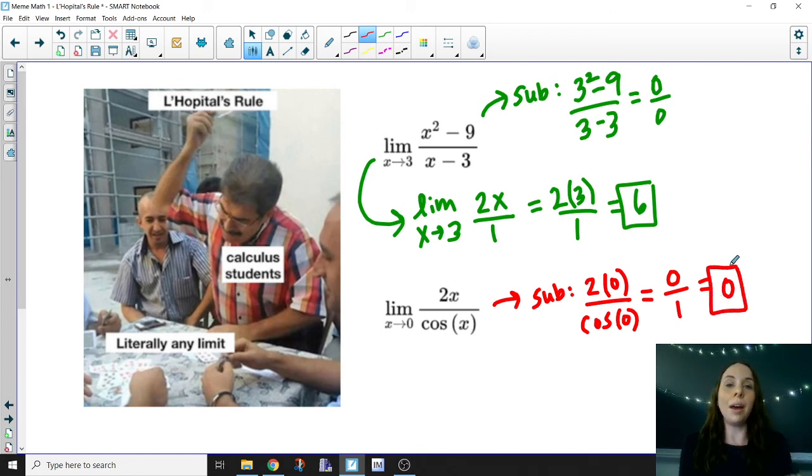First of all, you got your answer just by using substitution. That's the first reason you shouldn't use L'Hopital's Rule. Second, if you did try L'Hopital's Rule, think about what you would get: 2 in the numerator, -sin(x) in the denominator. Substituting 0 into that would lead you to an undefined answer.